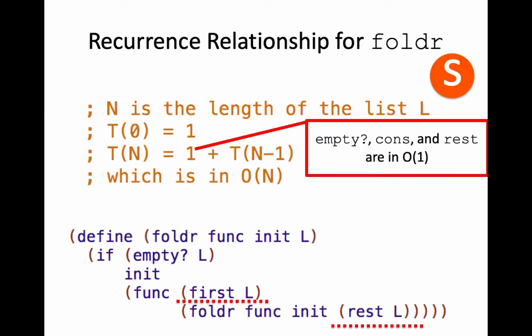So again, empty cons and rest and if, things we've seen like that, are all in O of 1. So our recurrence relationship for foldr can also be that for input of size 0, it takes one step. For input of size n, where n is the length of the list, it takes one step plus it makes a recursive call with one smaller. And when we unrolled this in the past, we found that this was in O of n.